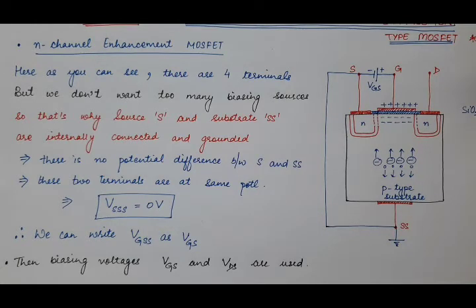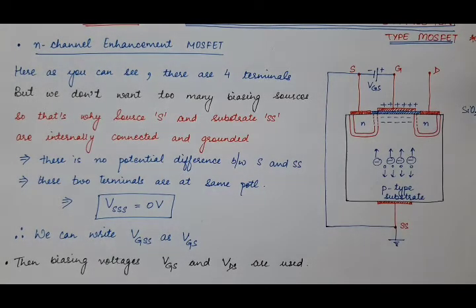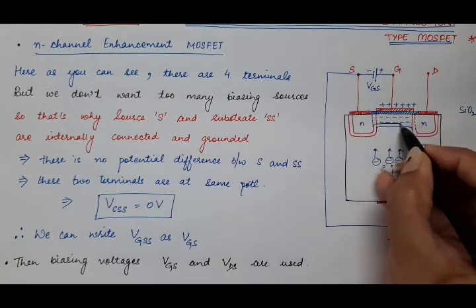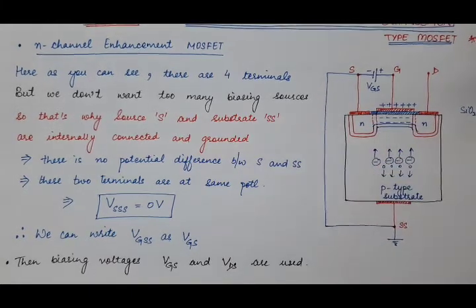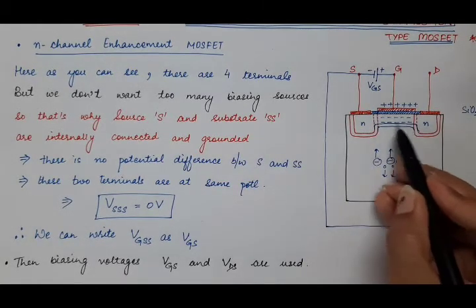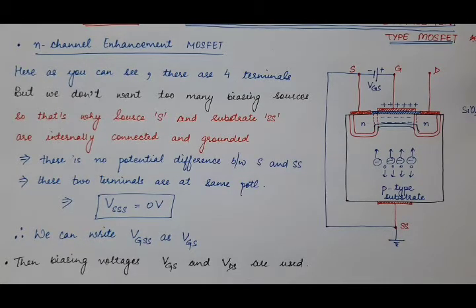In this way, the channel has been created between the source and the drain. The source and drain are now connected via this channel, and this channel carries charge carriers from source to drain. However, the charge carriers will only move from source to drain if we also apply a biasing voltage to the drain — if the drain is at a more positive potential with respect to the source.